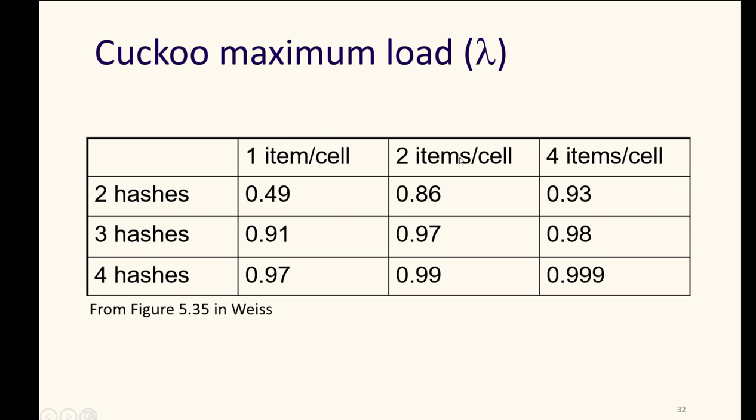If we give two items per cell, if we do a bucket of size two, then even with only two hashes, we can get to a load of 0.86 without hitting our maximum number of evictions, and 0.99 with four hash tables. If we have four possible items per cell, four spots in our buckets, then we're already in the 90% with only two hashes.